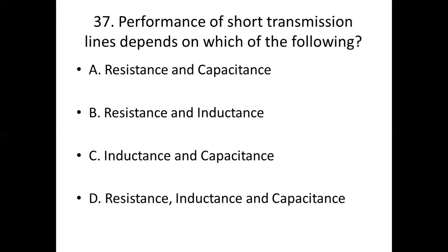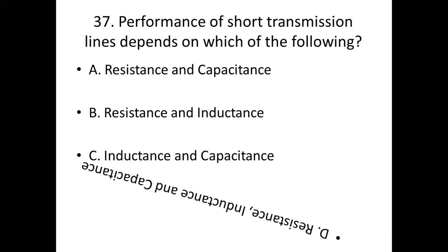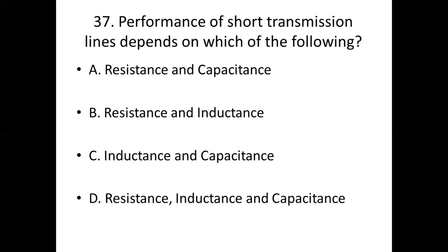37th bit. Performance of short transmission lines depends on which of the following? Option A: resistance and capacitance. Option B: resistance and inductance. Option C: inductance and capacitance. Option D: resistance, inductance and capacitance. Answer: Option D, resistance, inductance and capacitance.